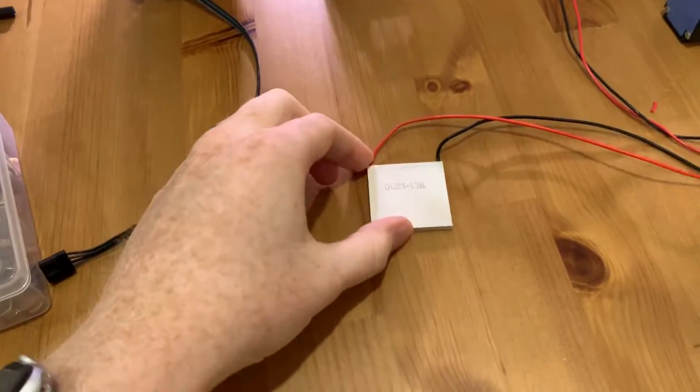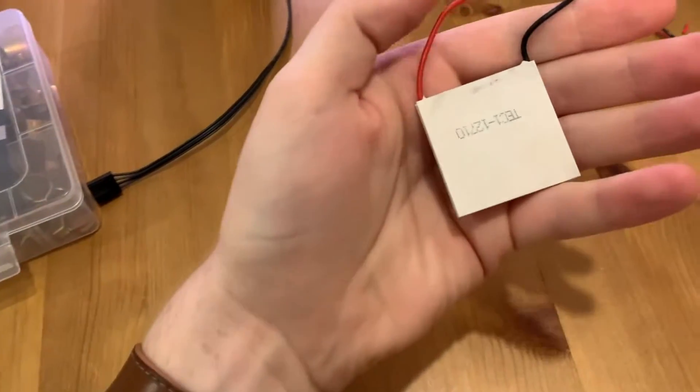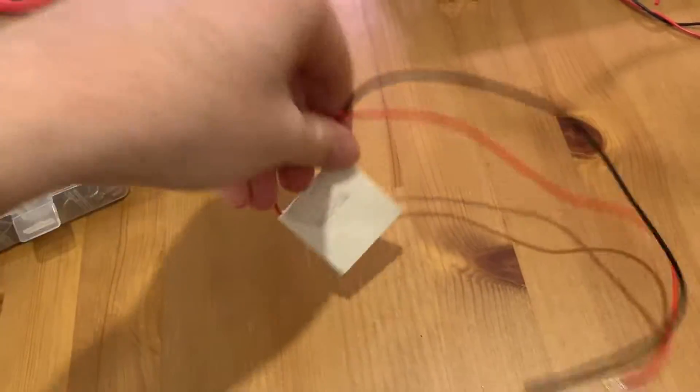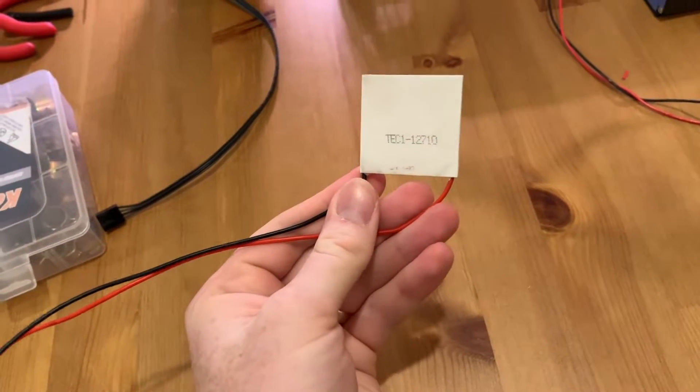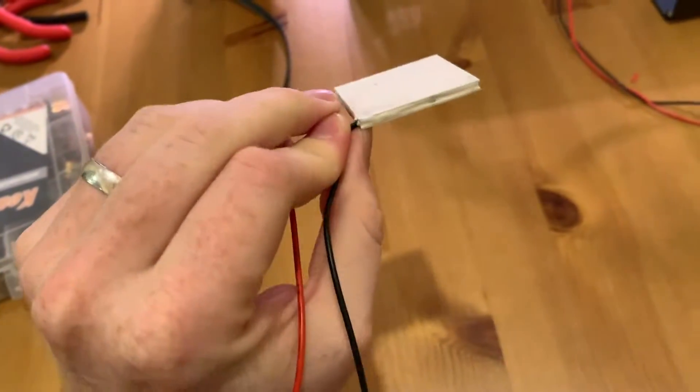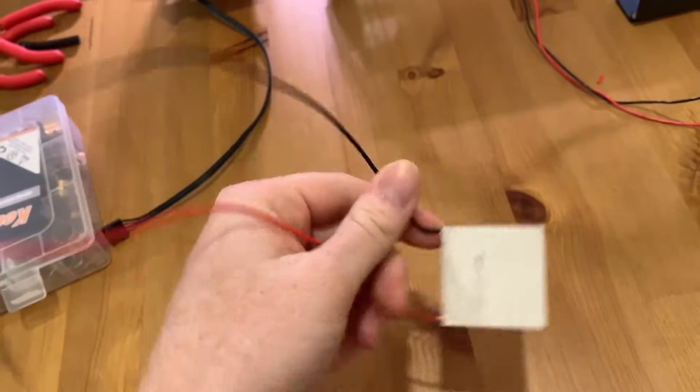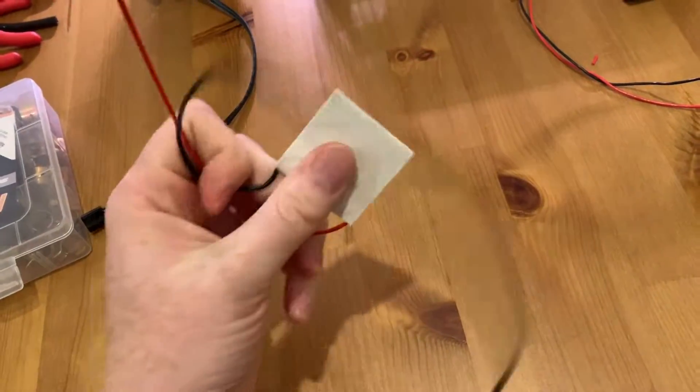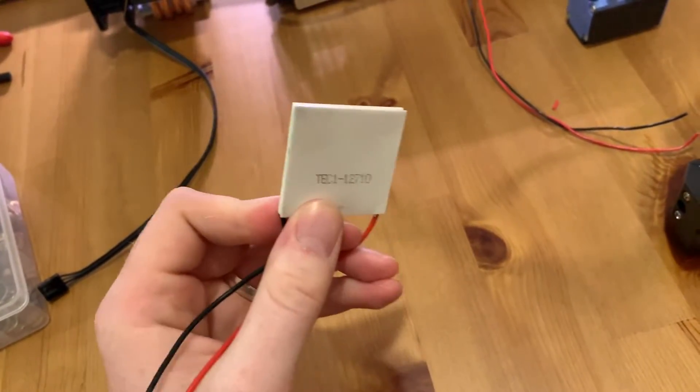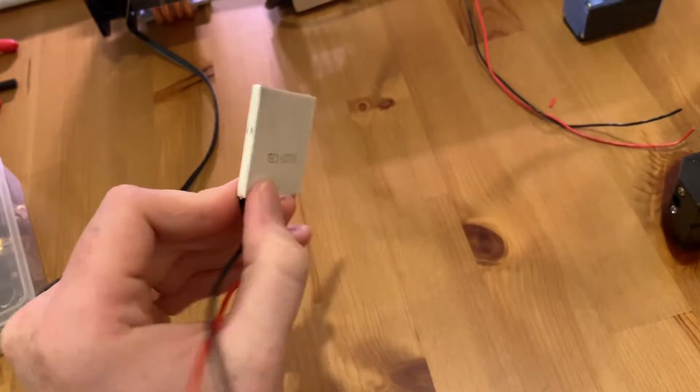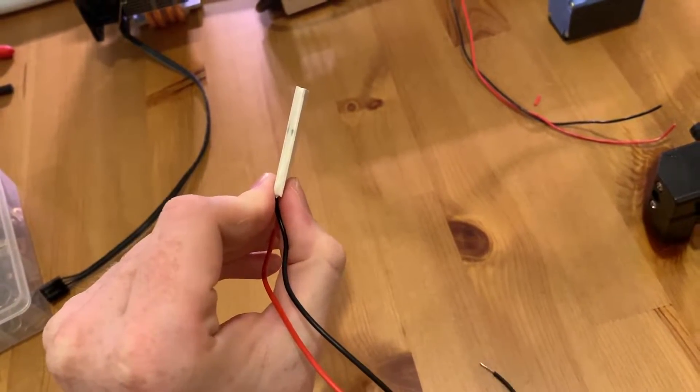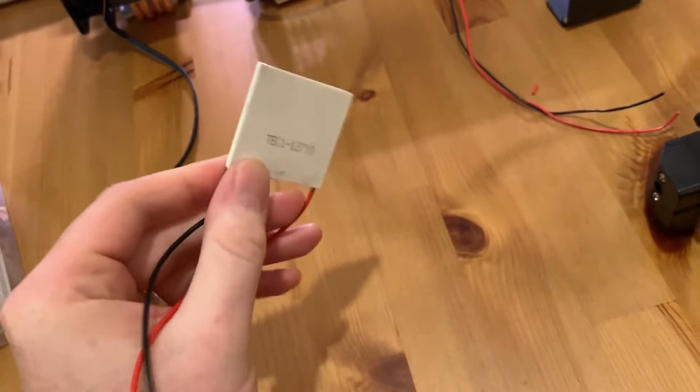So the heart of this chiller is this thing. This is called a thermoelectric cooler or Peltier cooler. It is a solid state device that when voltage is applied to it, it moves heat. Basically what it does is when voltage is applied, one side gets hot, the other side gets cold.